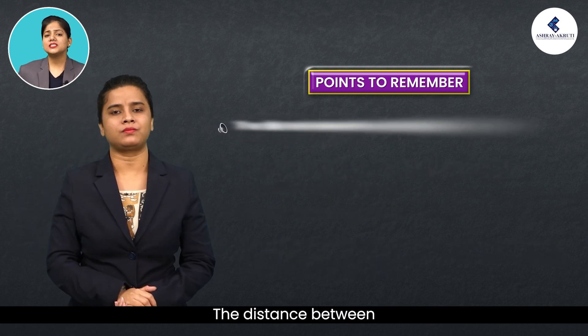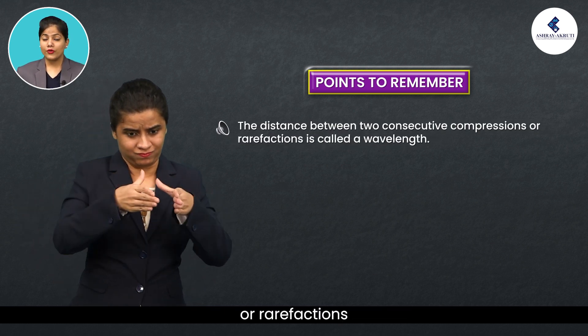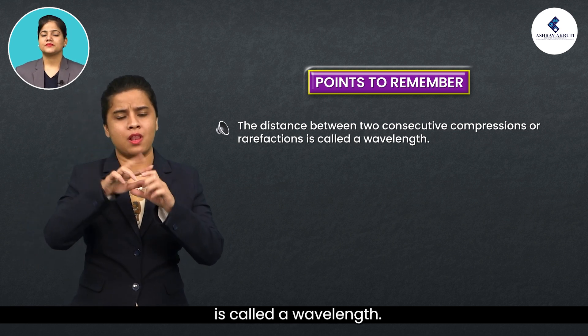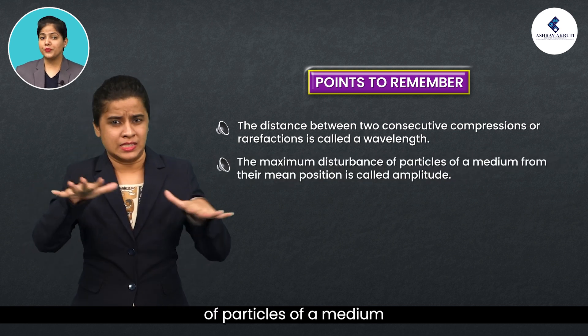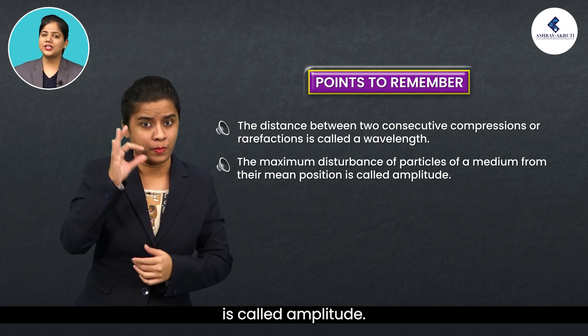The distance between two consecutive compressions or rarefactions is called wavelength. The maximum disturbance of particles of medium from their mean position is called amplitude.